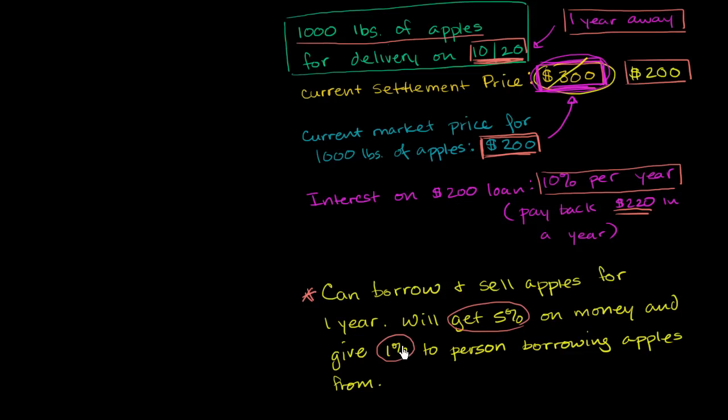And that person says, oh, sure, why not? That way I actually get some money on my apples that I had no intention of using for a year. And then I, as the borrower and seller, will get 4% net. I'll get 4% net on the apples.